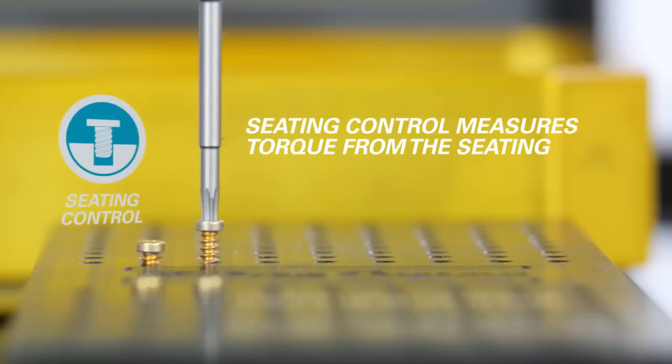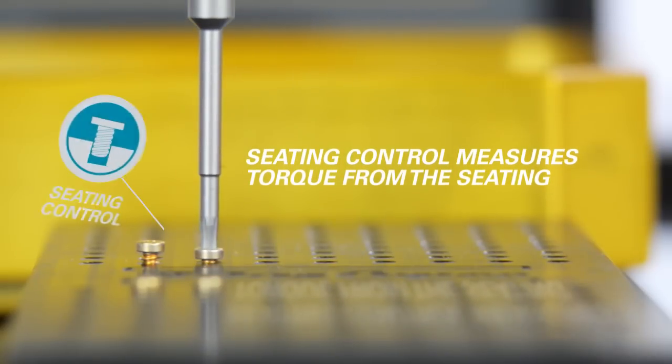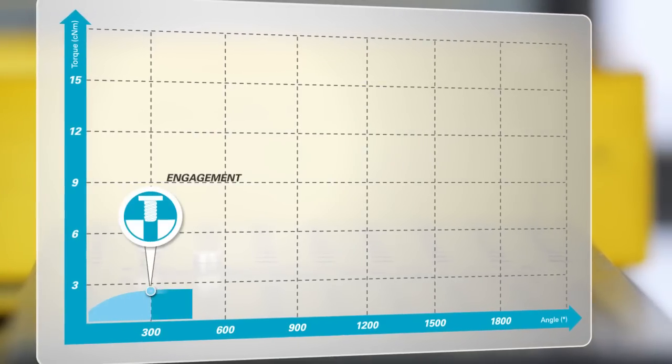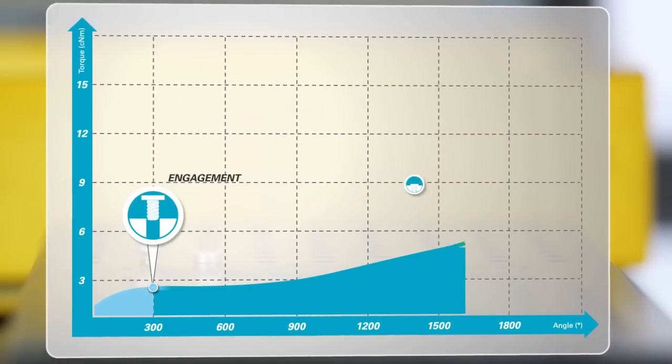The seating control strategy has a completely different approach. By detecting the seating point, it achieves the best tightening process, focusing on the right amount of clamping torque.